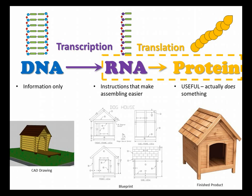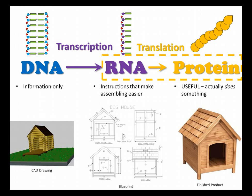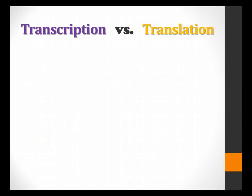This process of going from RNA to protein is called translation. So DNA is the information, RNA is assembly instructions, protein is what we are trying to build.